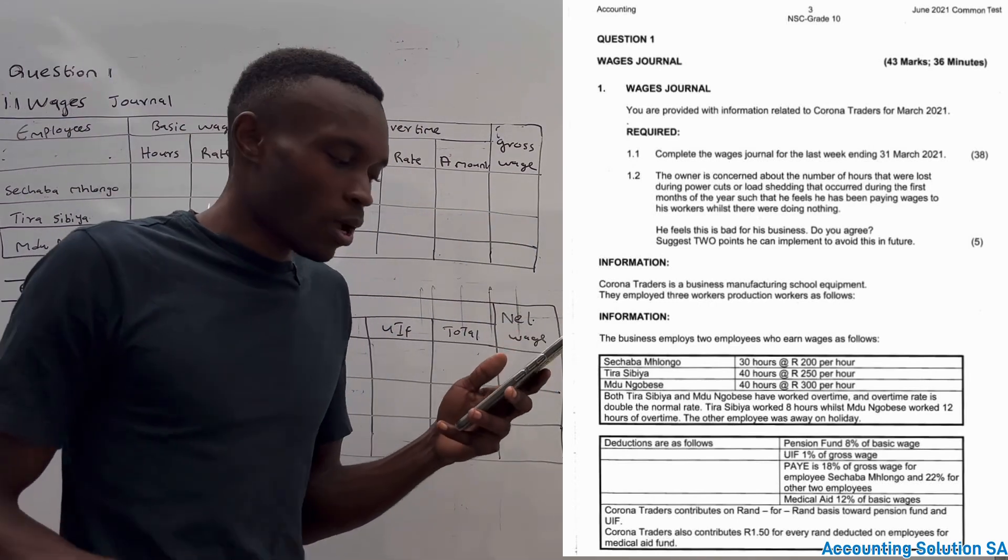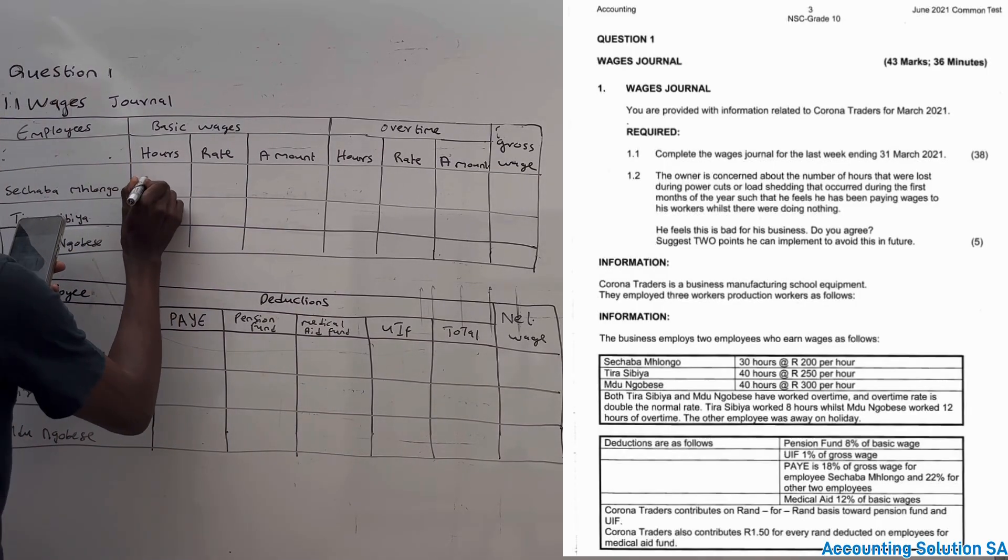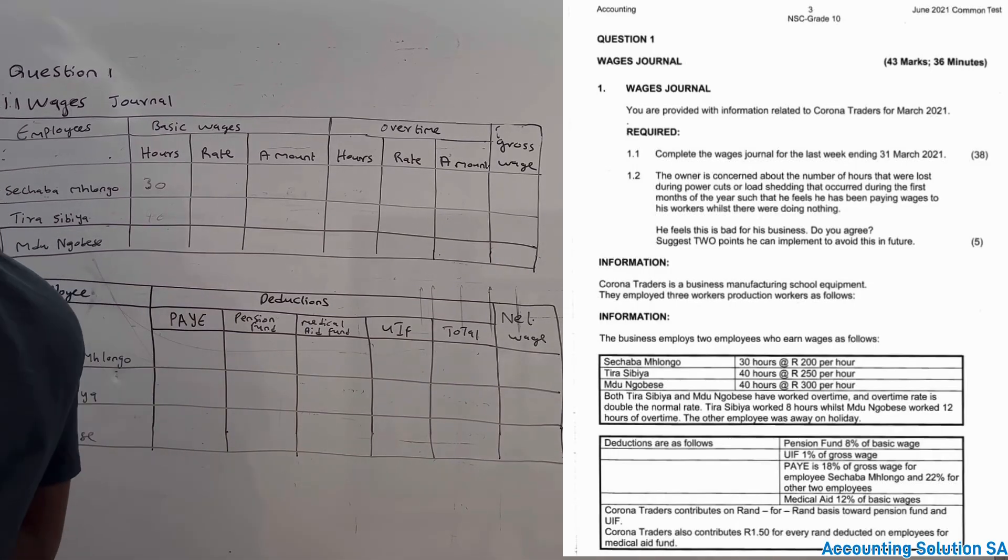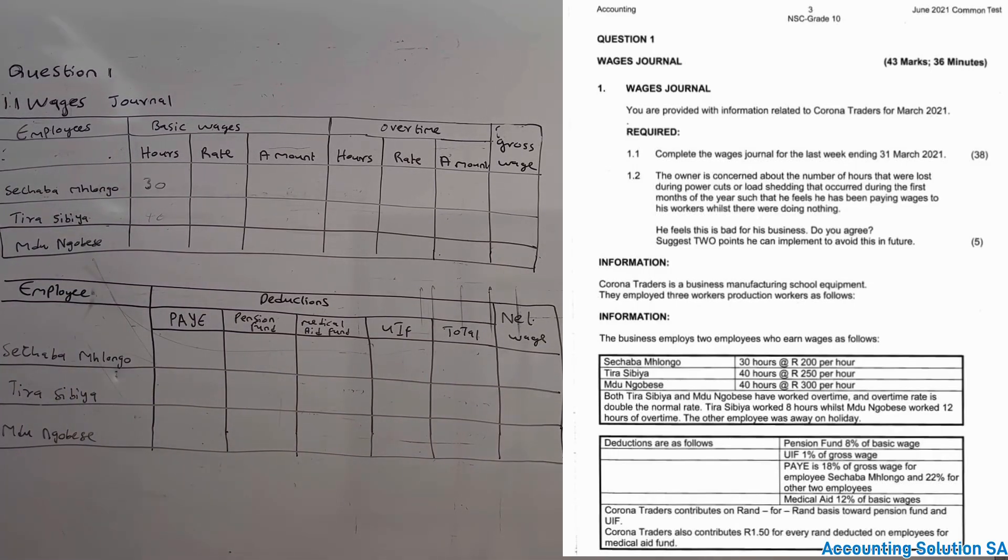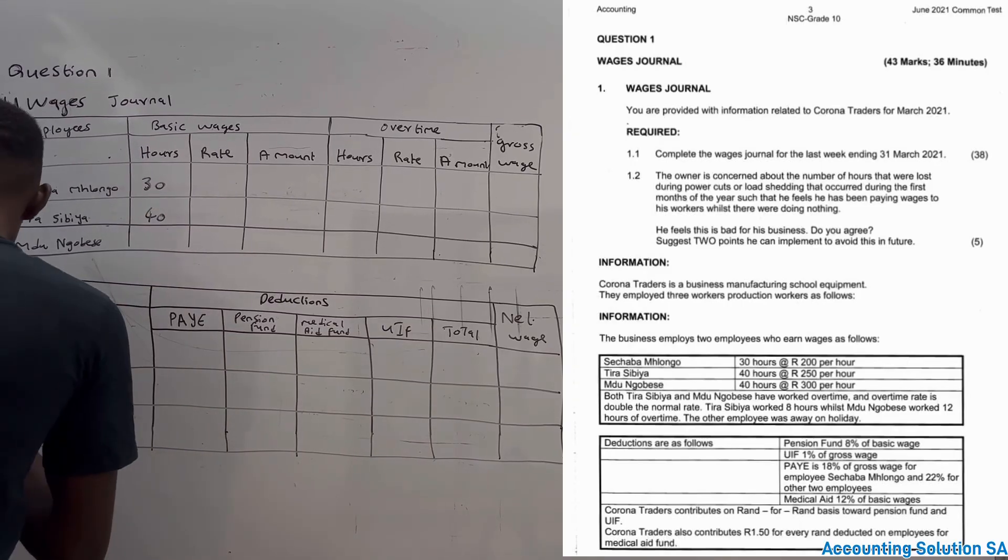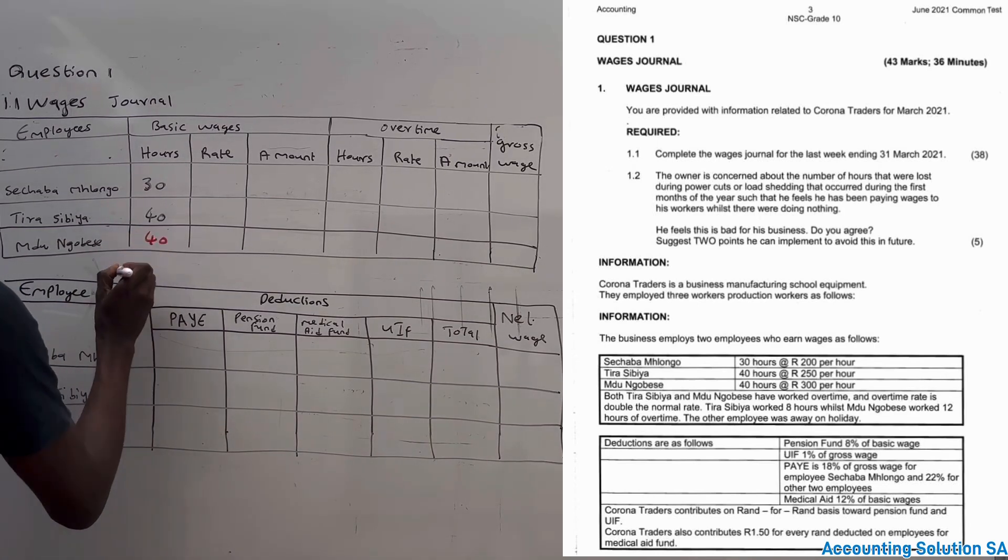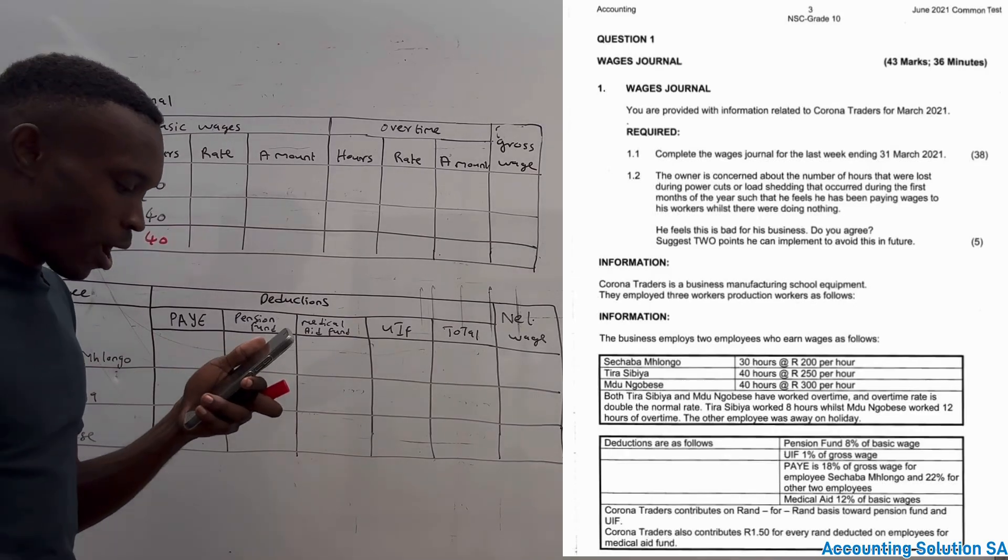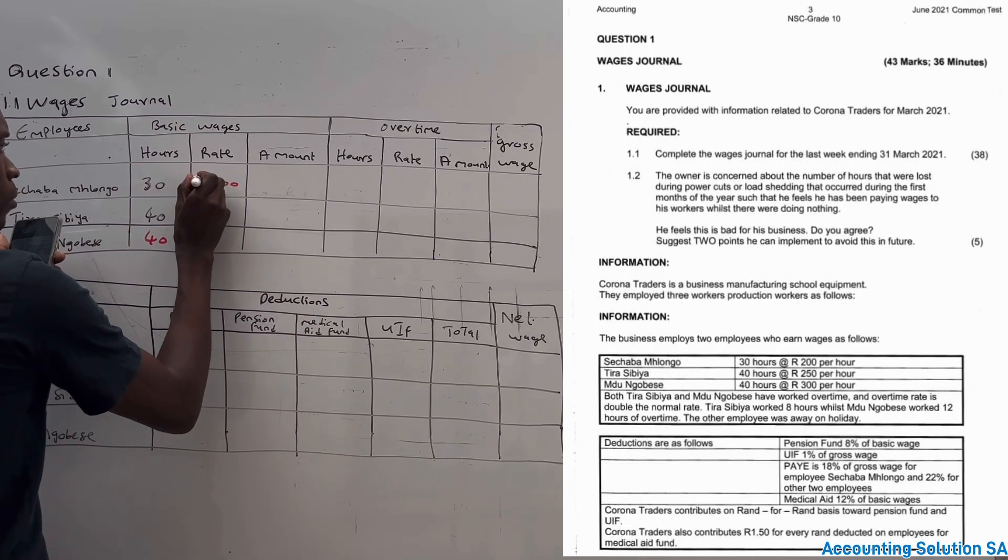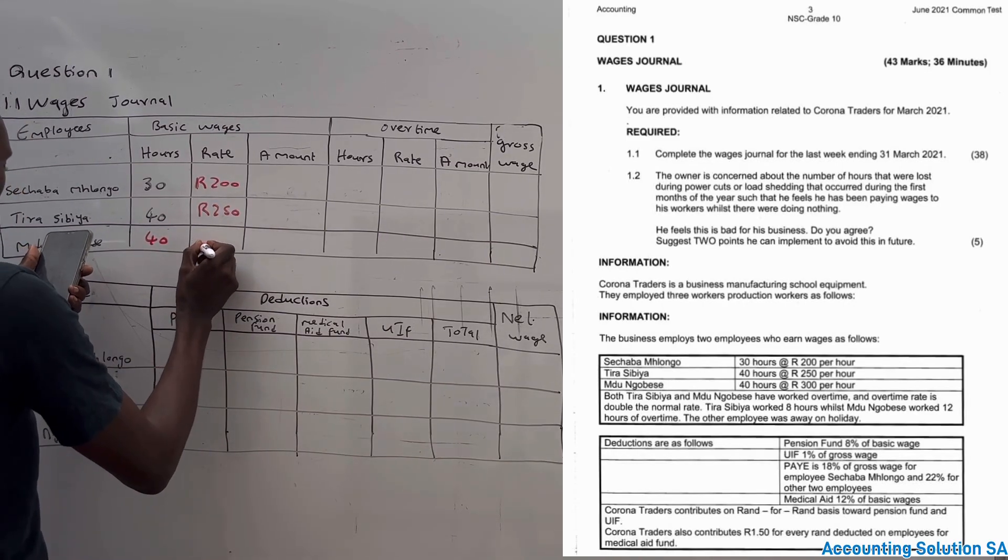Let's start with this. Mshongo, he worked how many hours? He worked 30 hours. And the other part, Tira, he worked 40 hours. Then the other employee is working 40 hours as well. Now let's check the rate per hour. How much are they earning? Each one is earning R200 per hour, and the other one is earning R250 per hour, and the other one is earning R300 per hour.